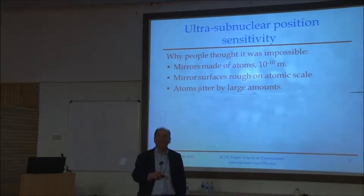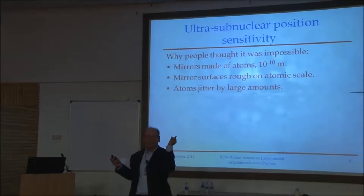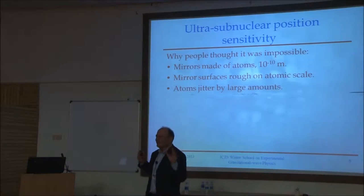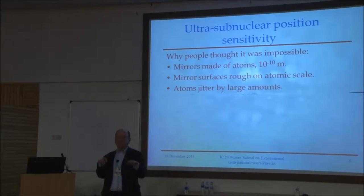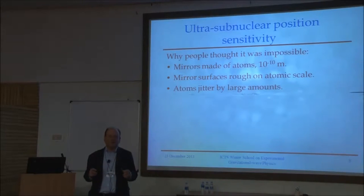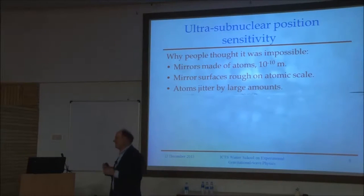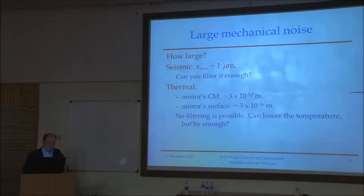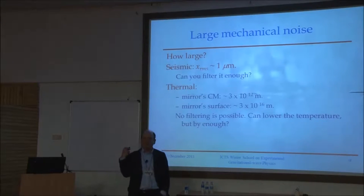If you take 10 to the minus 22 and say what delta x does that correspond to in multi-kilometer arms, you are talking about displacement sensitivities of 10 to the minus 18 meters. That's ridiculous, right? Tell me some length scales associated with the structure of matter. What's the diameter of a proton? 10 to the minus 15 meters. How can we do this? Unless you believe it's ridiculous the first time you hear about it, you aren't excited enough to be in this business.